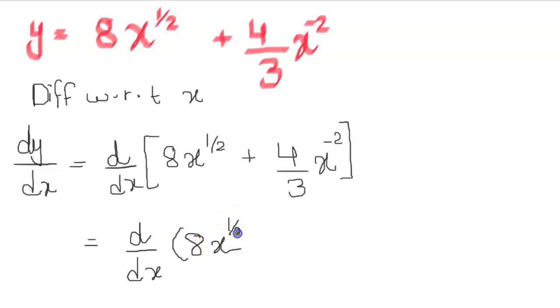8x to the half, plus d over dx of 4 over 3, x minus 2. Now I need to differentiate this term, then I need to differentiate that term. Let's do that on the next one.